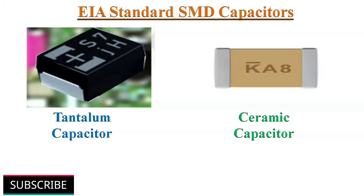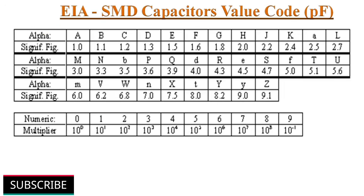SMD tantalum and ceramic capacitors are often marked with a two-digit EIA code — an alphabet letter and a numerical number — to indicate their value. A table shows the alphabet letter code and its significant figure value in pF, and the numeric number code with its corresponding multiplier value. Using this table, we can find out the capacitance value of an EIA-marked SMD capacitor.